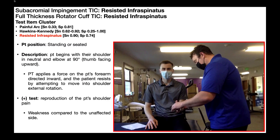We're now going to talk about the resisted infraspinatus test, also called the resisted external rotation test. In reality, this is just an external rotation manual muscle test for the shoulder. Notice it's a part of two test item clusters — one for subacromial impingement syndrome and another for full thickness rotator cuff tear. If we look at the psychometrics, the specificity isn't great at 0.74, but the sensitivity as a standalone test is 0.90 or 90%. Given this higher sensitivity, this test can be used as a screening tool to rule out one of these two shoulder pathologies.